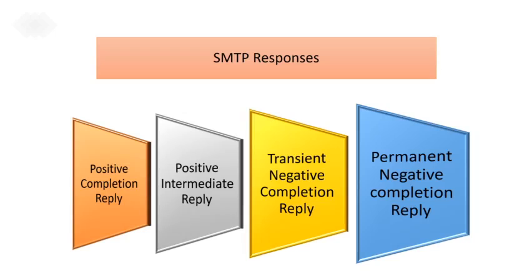SMTP responses are sent from the server to the client. Each response begins with a three-digit code and may be followed by additional textual information. The leading digits indicate the category of the response. The different categories are: positive completion reply, positive intermediate reply, transient negative completion reply, and permanent negative completion reply.